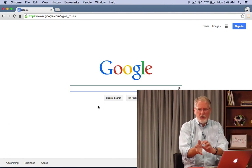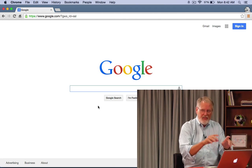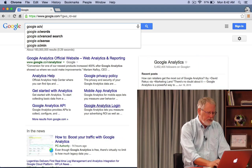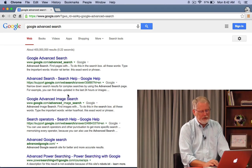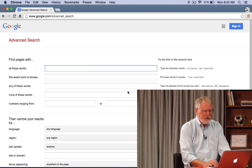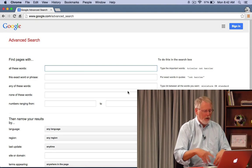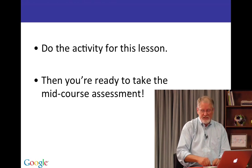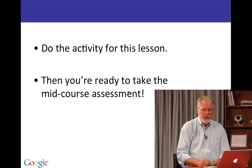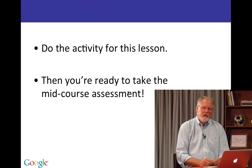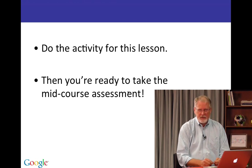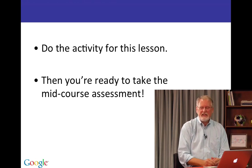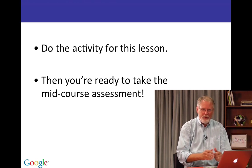There's one other trick: if you don't want to run a search first and then click the gear icon, you can always just search "Google advanced search" and it's always the first result. Click there and you've jumped right into it — you can bookmark it if you like. So now you're ready to do the activity for this lesson using in-text, and once you've completed that you can take the midterm course assessment, which covers all the skills you've been learning up to this point. Go ahead and try these activities and see how you do!